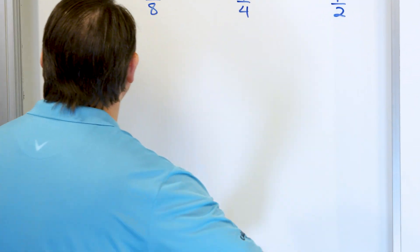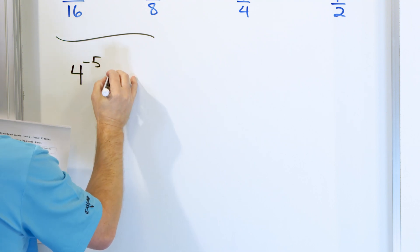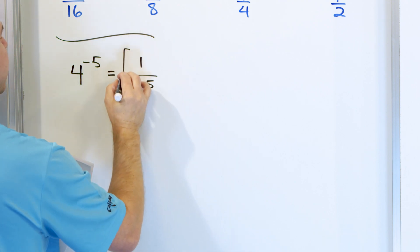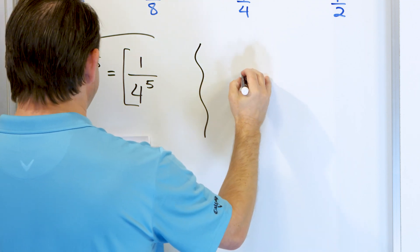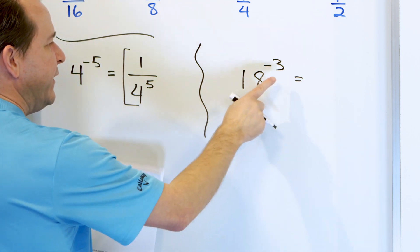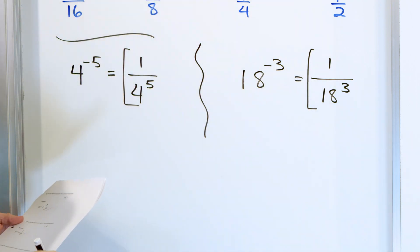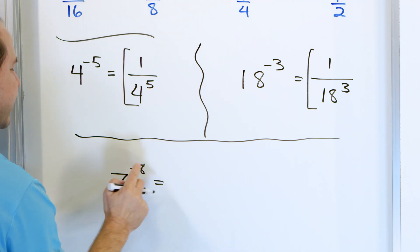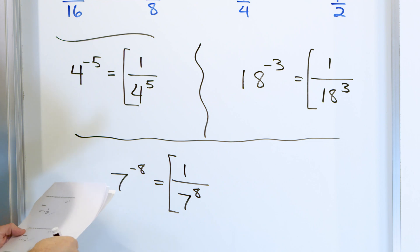All right, with all of that out of the way, let's do our actual problems. Here I have four to the negative five. How do I write this as a positive exponent? I drop it down and make it 1 over four to the power of five. Negative exponent goes down, makes it positive. Let's take another quick example: 18 to the negative three power. It's a negative exponent — drop it to the bottom and make it 1 over 18 to the positive three power. What about seven to the negative eight power? Drop it down and make it 1 over seven to the positive eighth power. Every time it's negative, drop it down and make it positive.